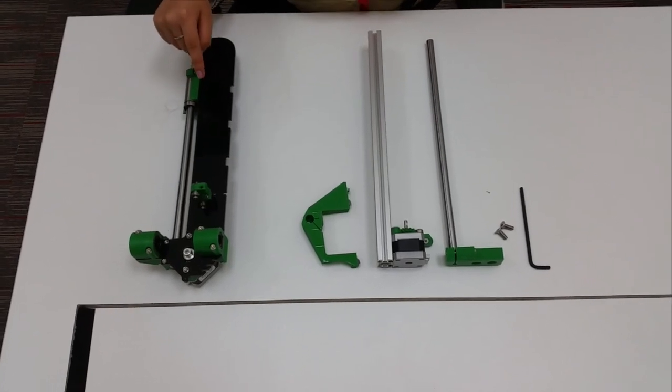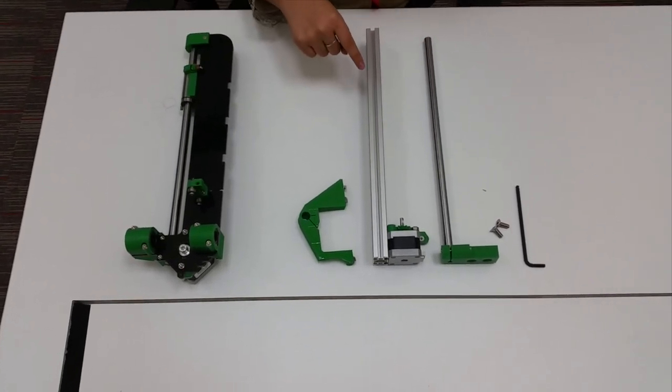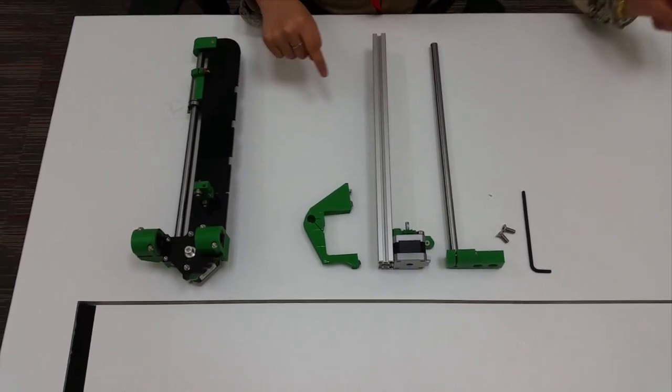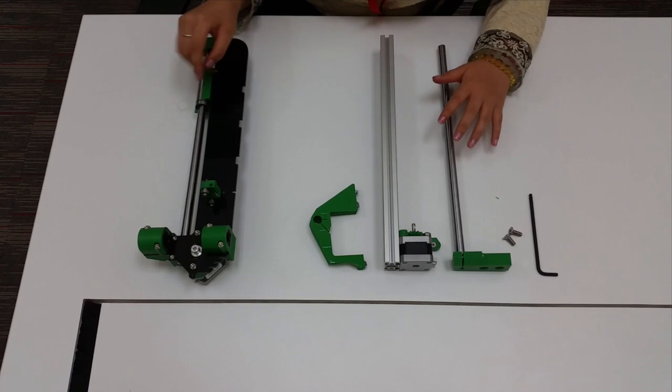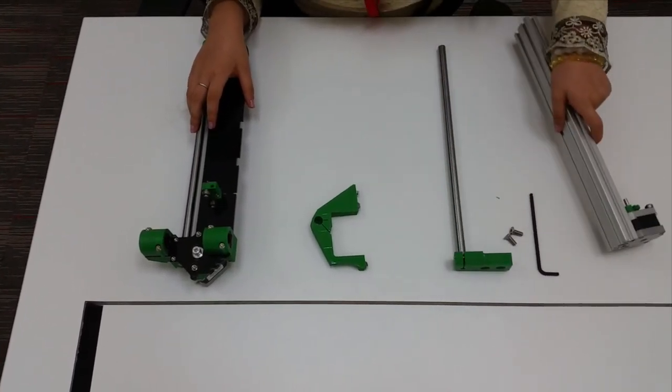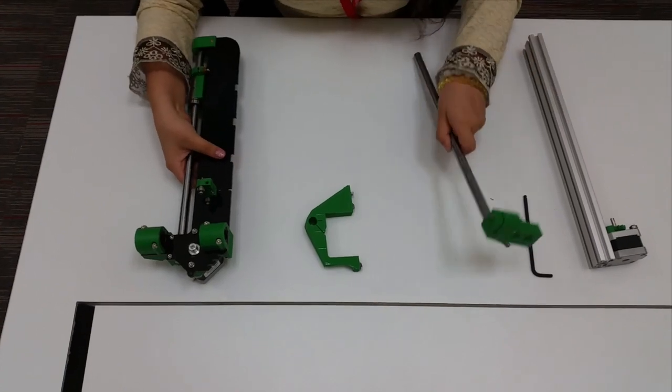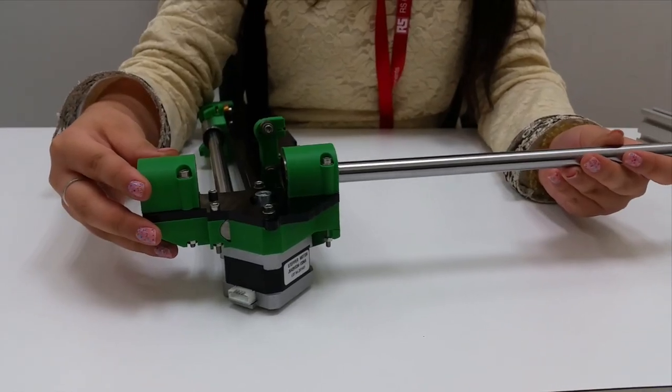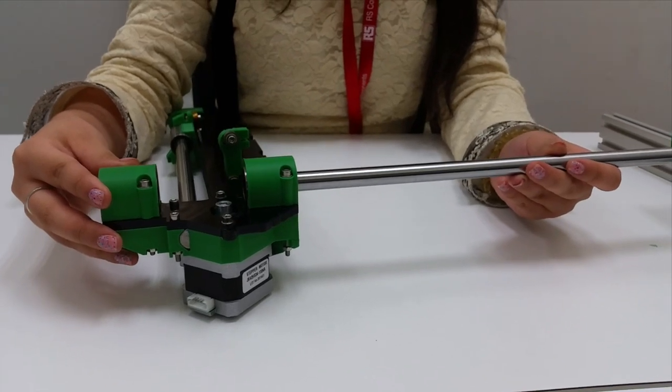This is the fully assembled x-axis and this is a half-assembled z-axis. Now I'm going to combine the z-axis with my x-axis. The first step is to insert this rod into the x-axis.